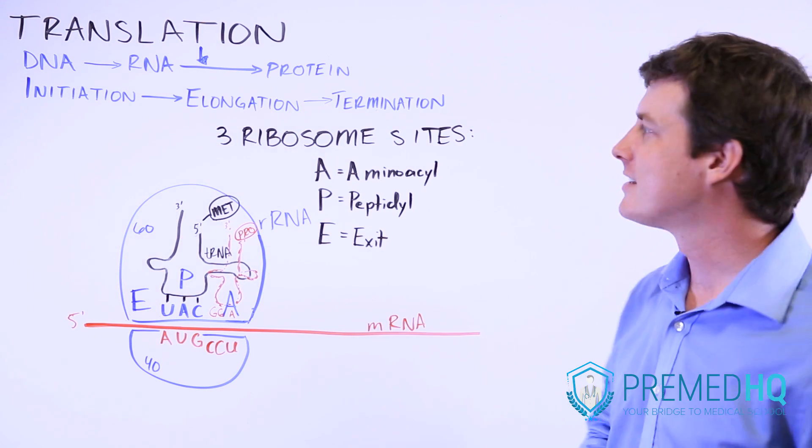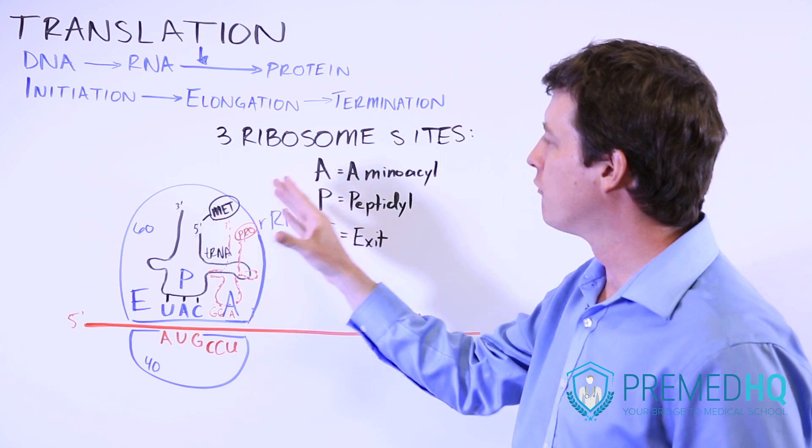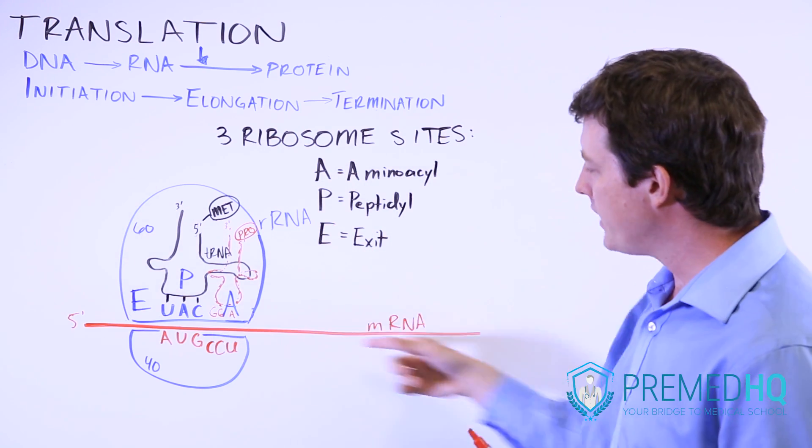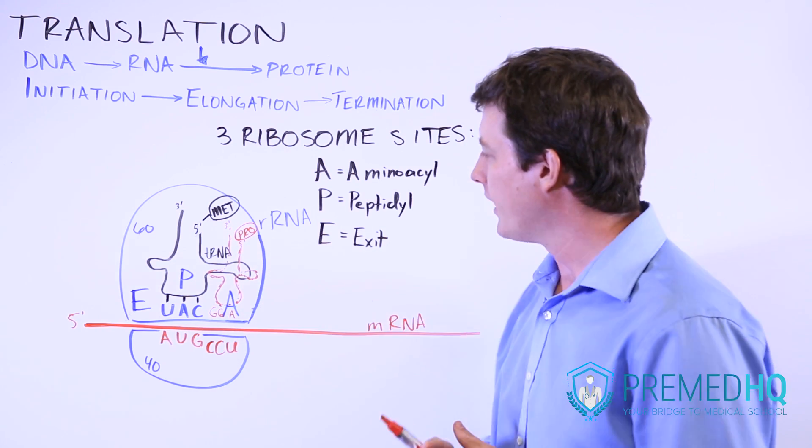Now we move on to the process of elongation, where we produce a growing and lengthening polypeptide chain based off of this mRNA transcript that we have.